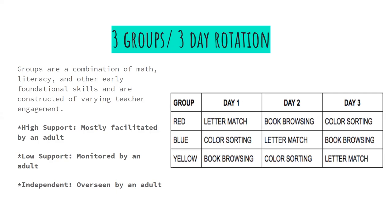Teachers working in high- or low-support groups monitor the independent group as well. For example, with three groups — red, blue, and yellow — on day one, red does letter match, blue does color sorting, and yellow does book browsing (the independent group). On day two, the activities rotate so red becomes the independent group. On day three, rotate again. After all three days, every group has done each activity, and then a new set begins.